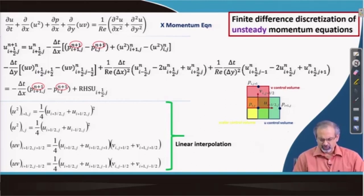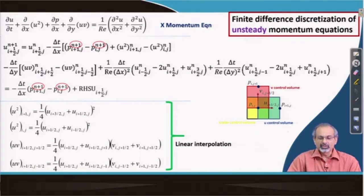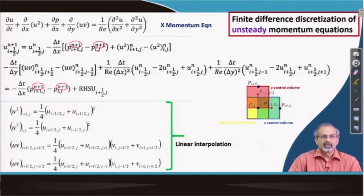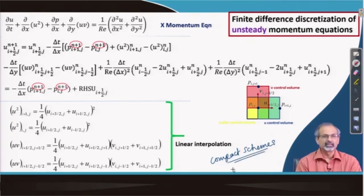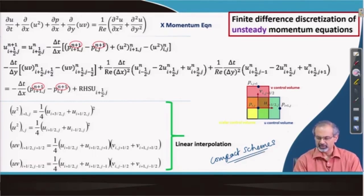Like we have used linear interpolation, we can use all the different schemes discussed in the context of the 1D advection-diffusion equation here as well. We can also use more accurate compact schemes discussed earlier — though more tedious to implement, they can augment accuracy significantly.